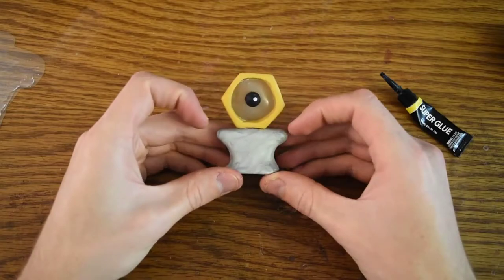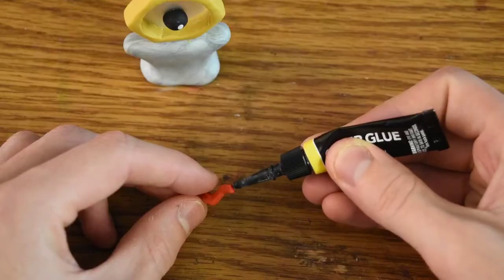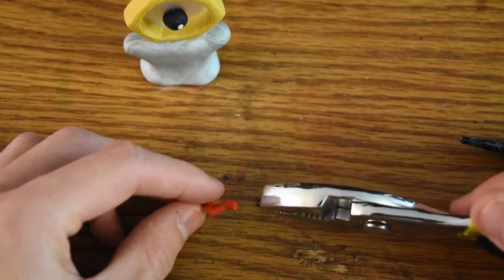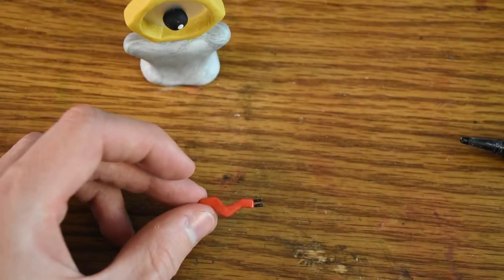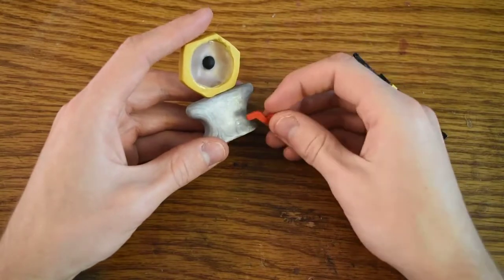We can move on to our final step, which is the tail. Let's take these little prongs. I had to use pliers for this because it was just too hard otherwise to attach these little pieces. Now the tail onto the back of the body.